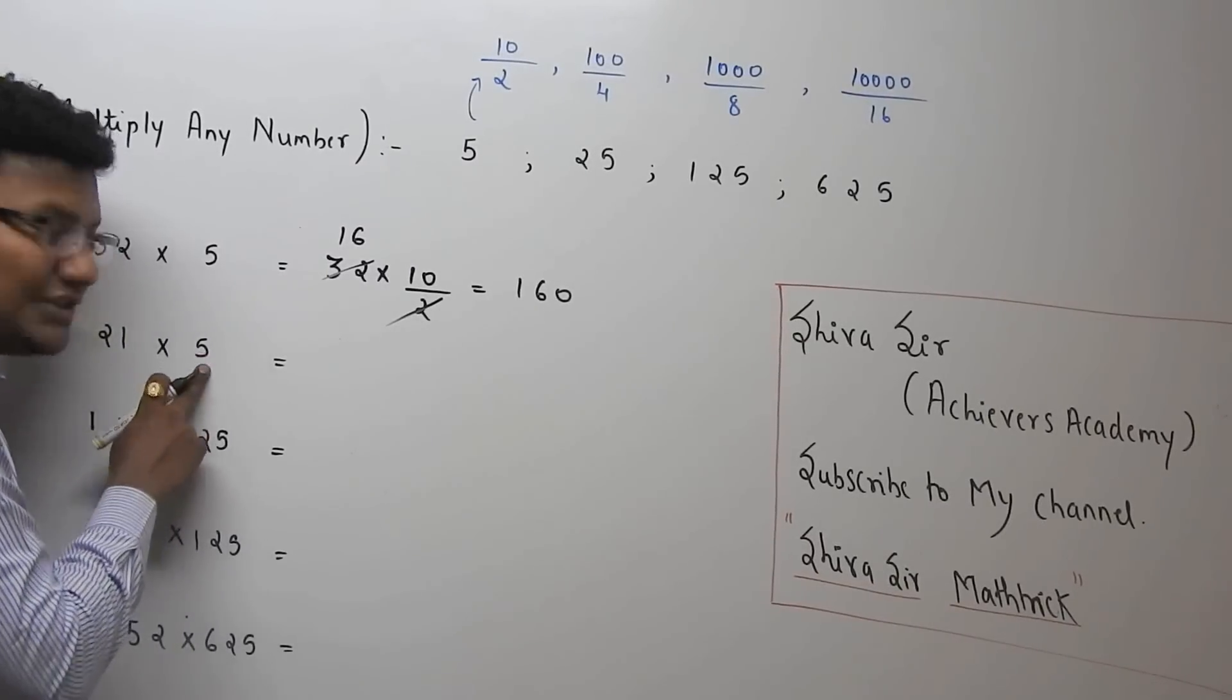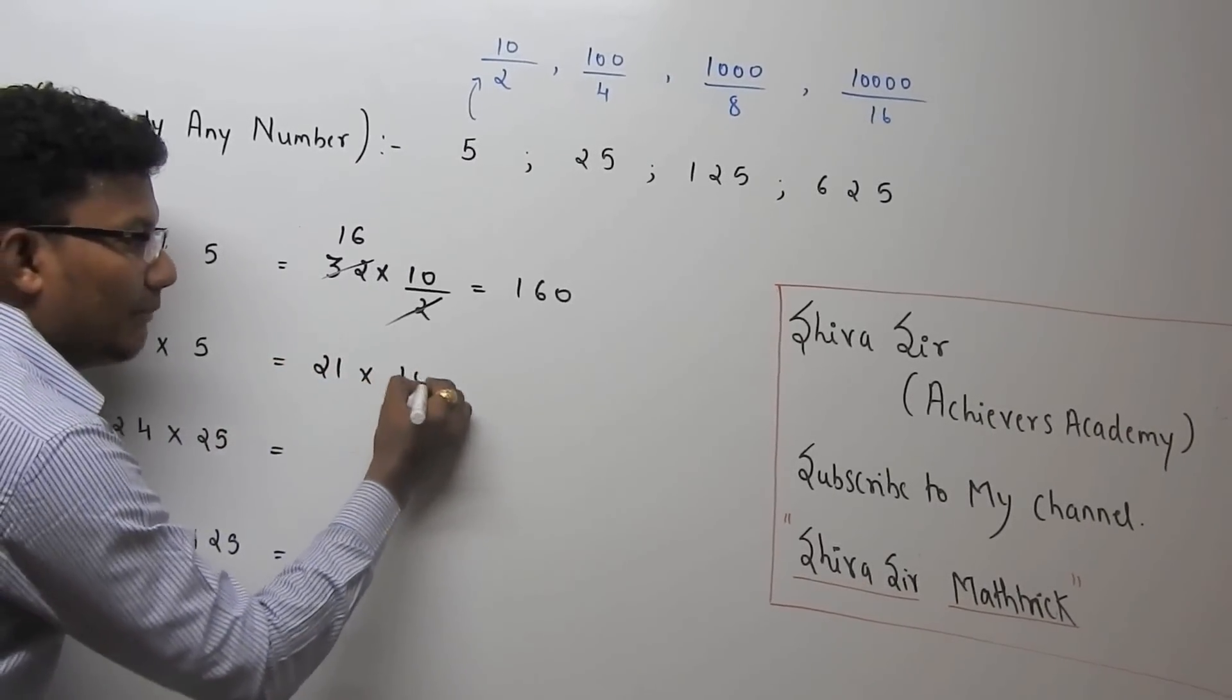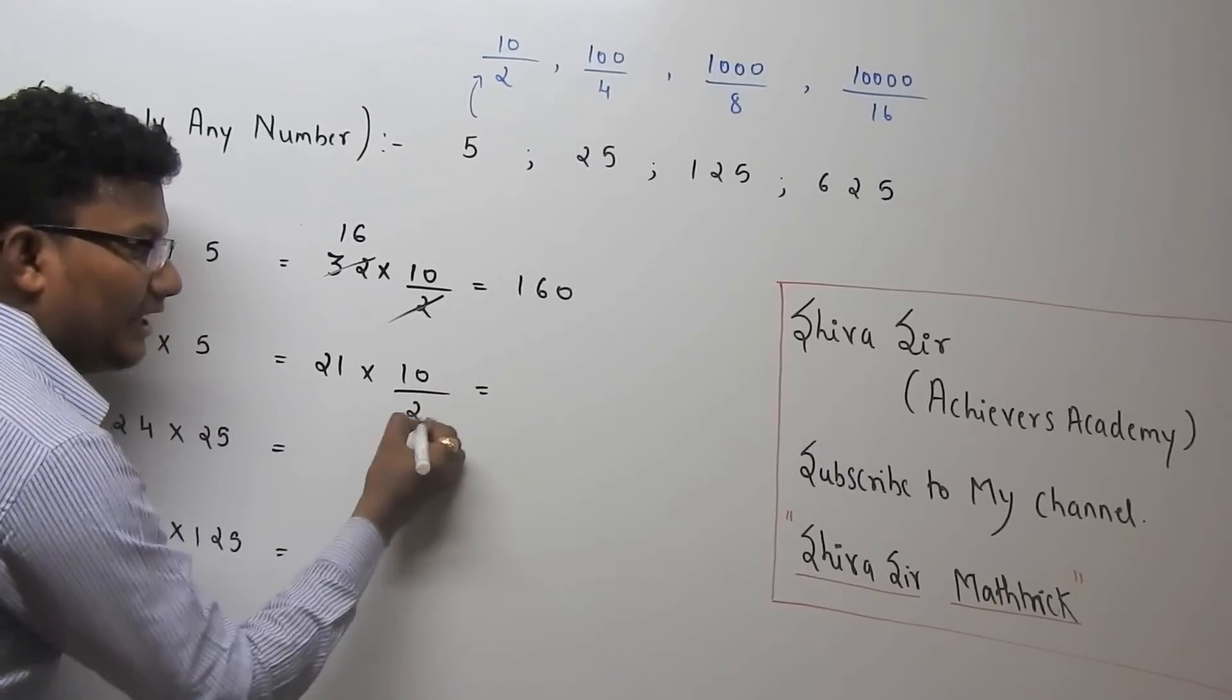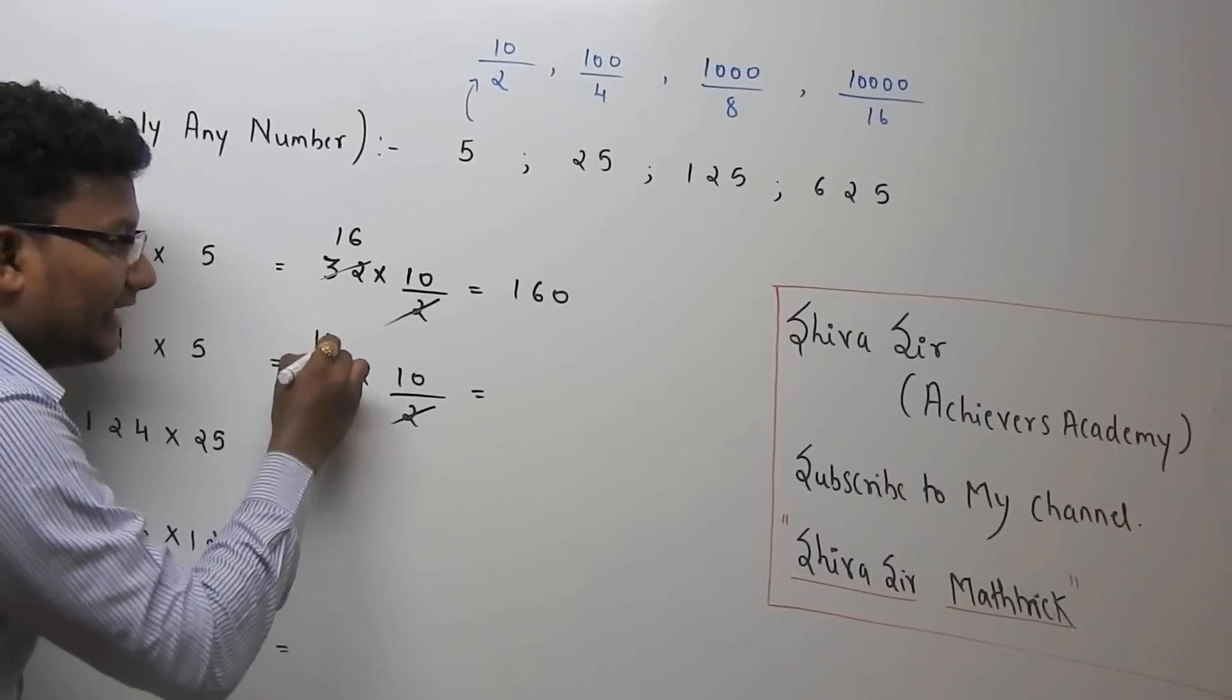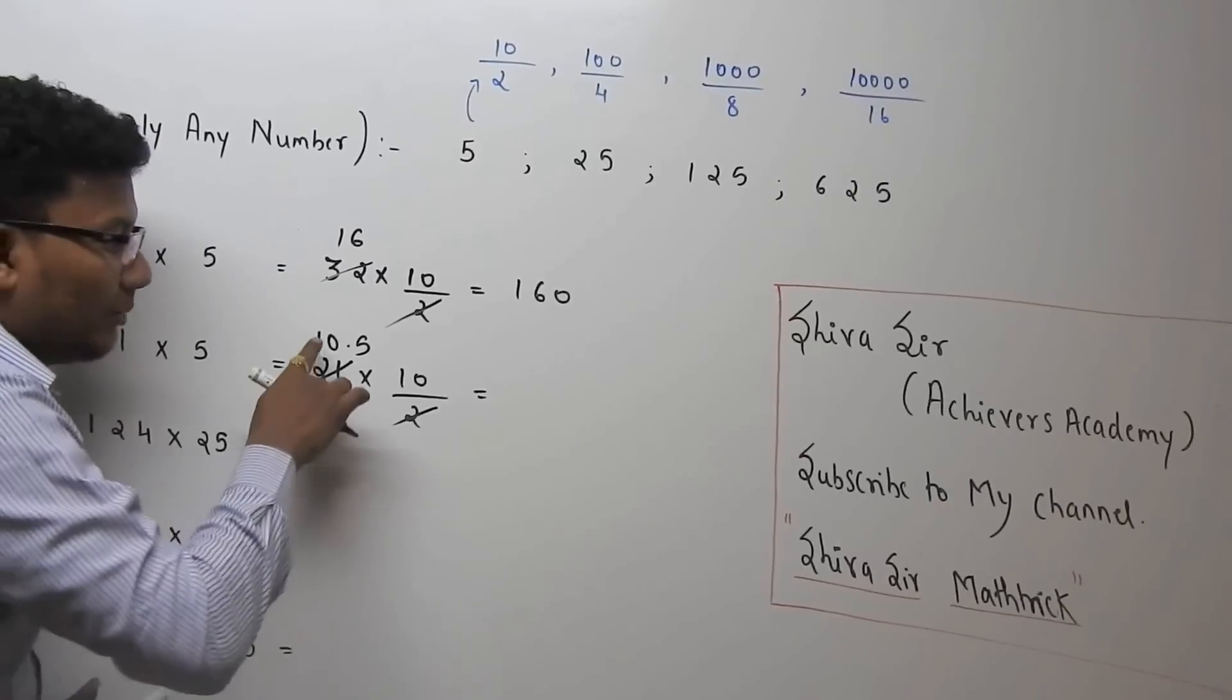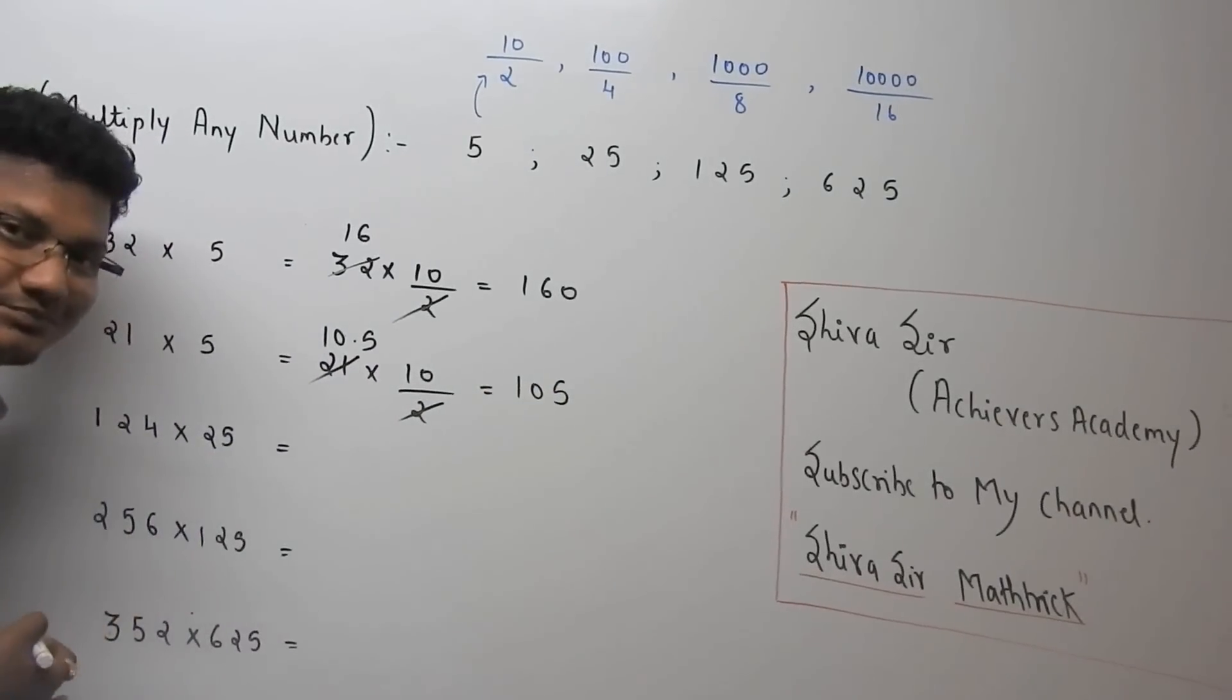21 into 5. This 5 can be written as 10 by 2. So 21 into 10 by 2. 21 divided by 2 is 10.5. Multiply 10.5 into 10, you will get the answer 105.